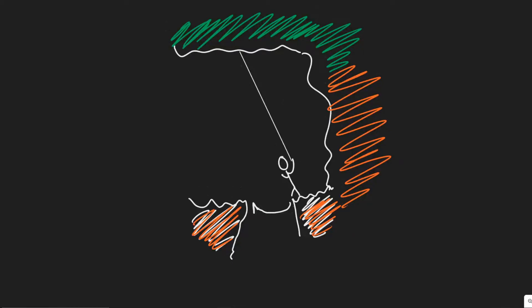In this problem, we're told Tarzan plans to cross a gorge by swinging in an arc from a hanging vine. If his arms are capable of exerting a force of 1,350 newtons on the rope, what is the maximum speed he can tolerate at the lowest point of his swing? His mass is 78 kilograms and the vine is 5.2 meters long.